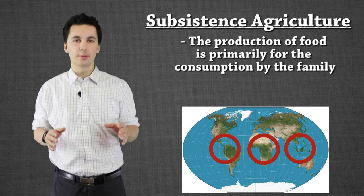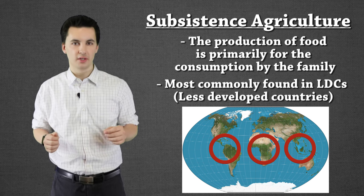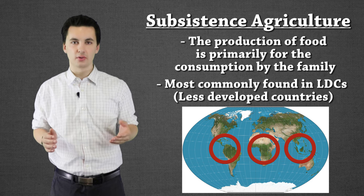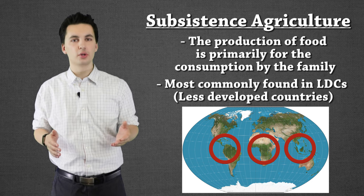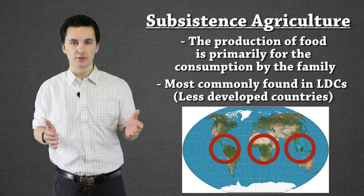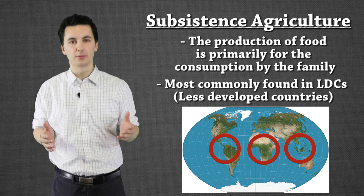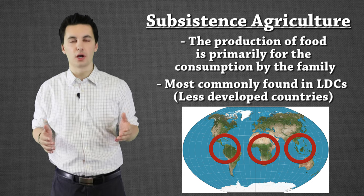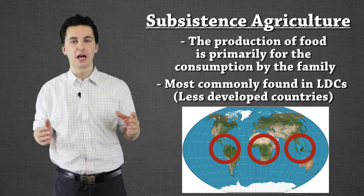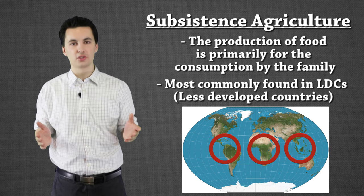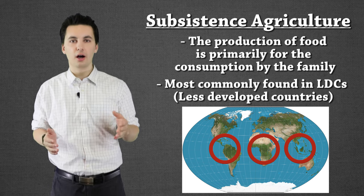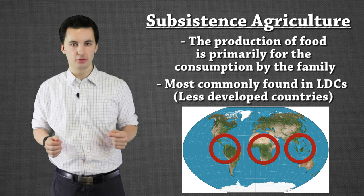Subsistence agriculture is most commonly found in LDCs — less developed countries. It's important to understand what an LDC is and where these different types of agriculture are located. On the screen you can see a map with general regions highlighted where we see the highest percentages of subsistence agriculture.